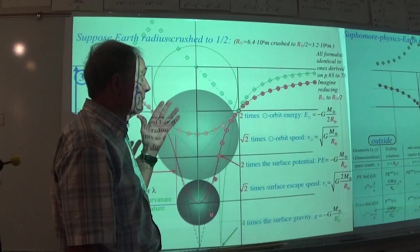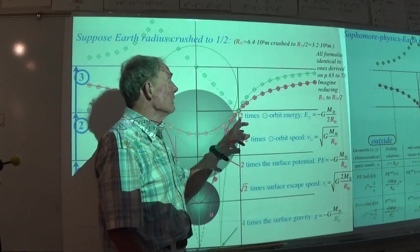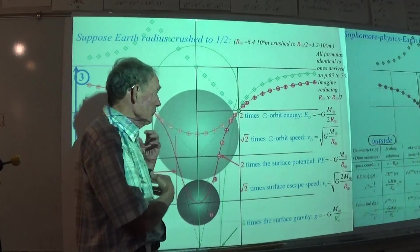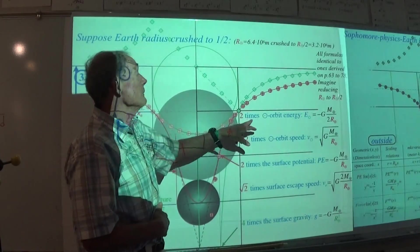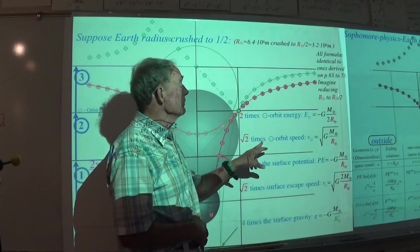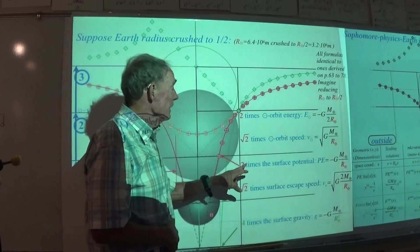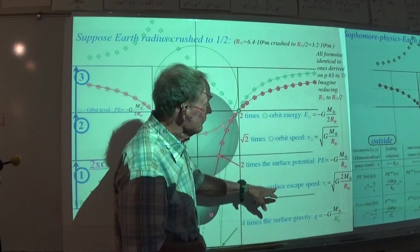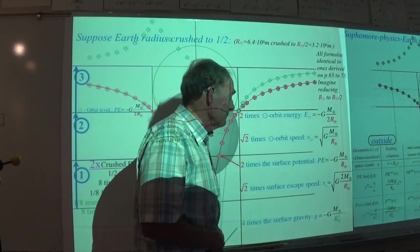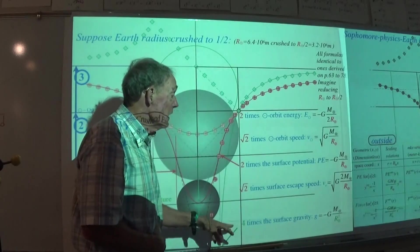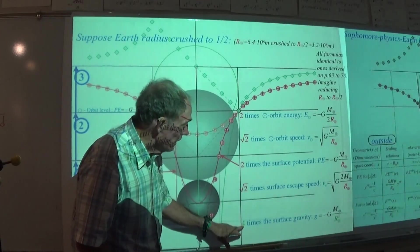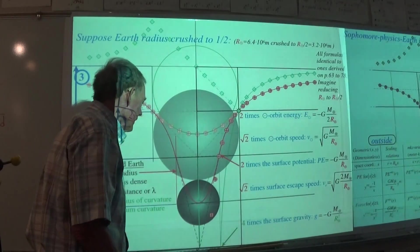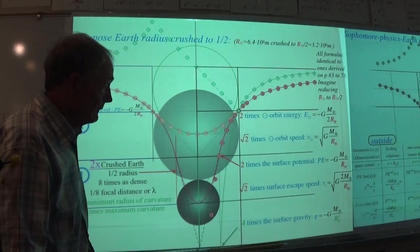And that's what you want to be good at, I think, in any sort of physics, but particularly in mechanics. You want to know if somebody changes something by a certain factor, in this case two. Well, I get two times the orbit energy, I get square root of two times the orbital speed, I get two times the surface potential, I get square root of two times the surface escape speed, that's escape velocity.